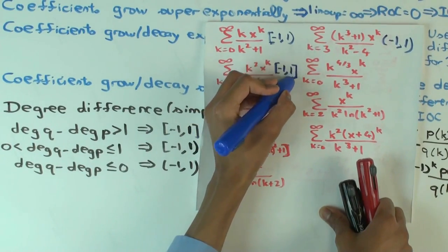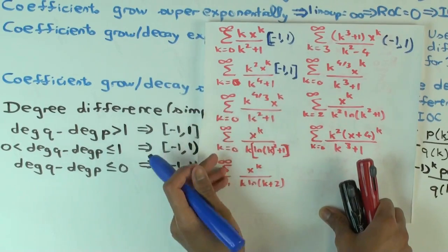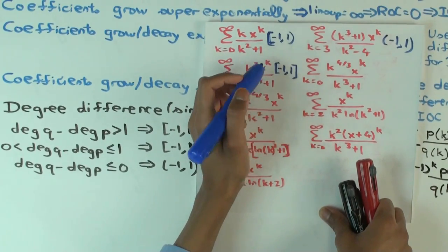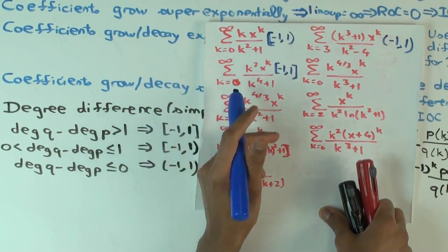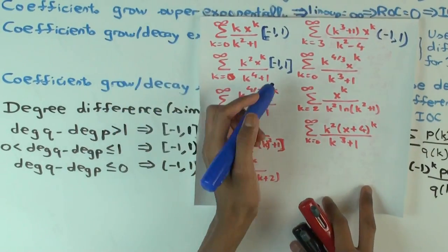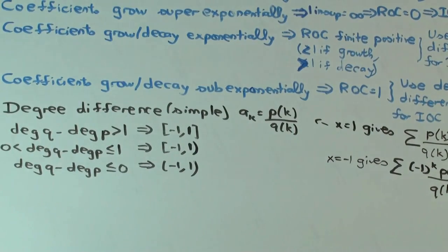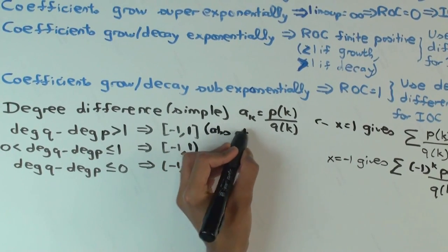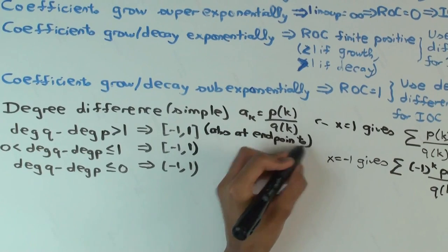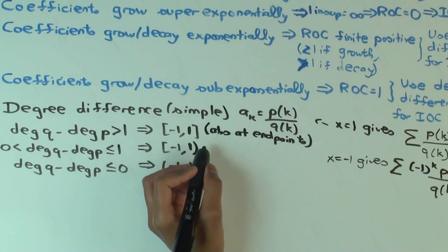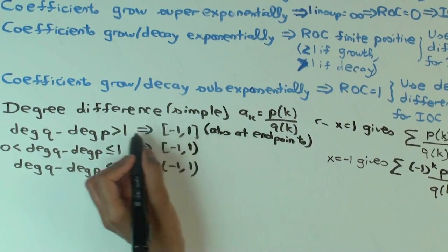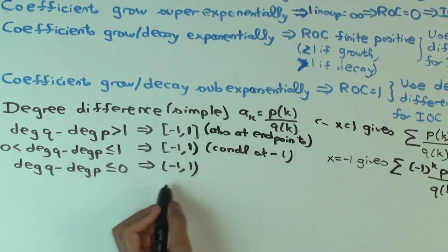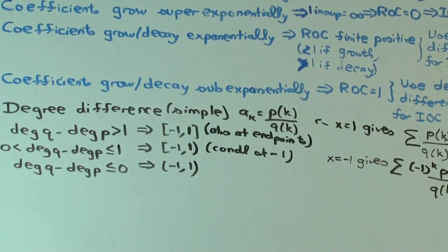The next one is both closed. I should mention: in the cases where the degree difference is exactly one, at the closed endpoint you don't have absolute convergence — you just have conditional convergence. Whereas in the case where the degree difference is greater than one, it's absolute convergence at both endpoints. It's always absolute convergence in the interior of the interval of convergence in all situations. But at endpoints it may be absolute or conditional — in this case with degree difference greater than one, it's absolute at endpoints.